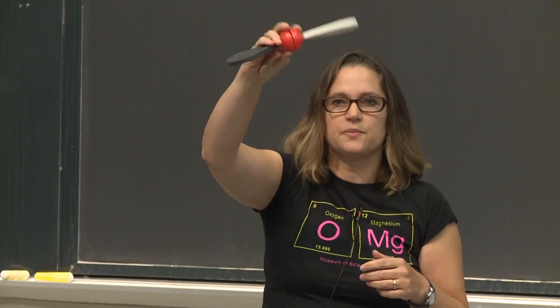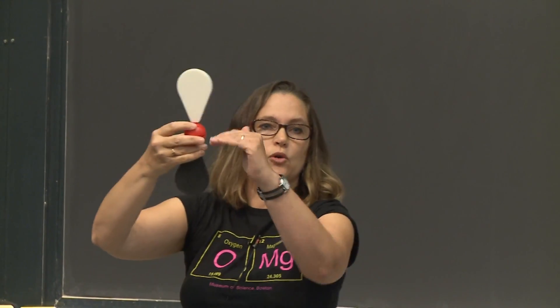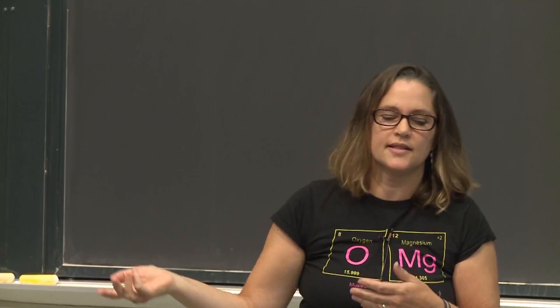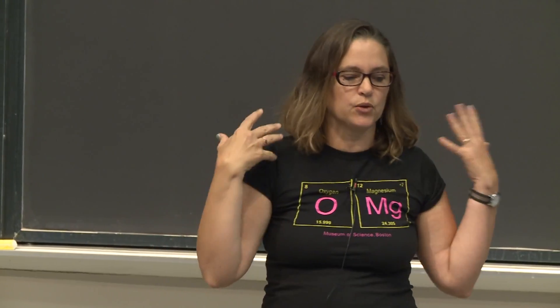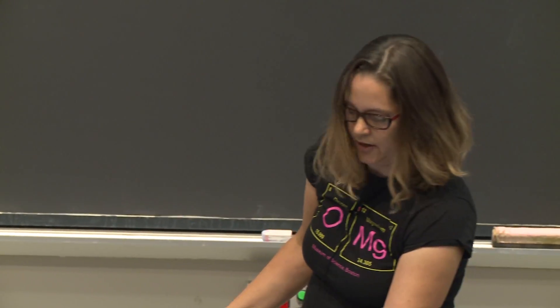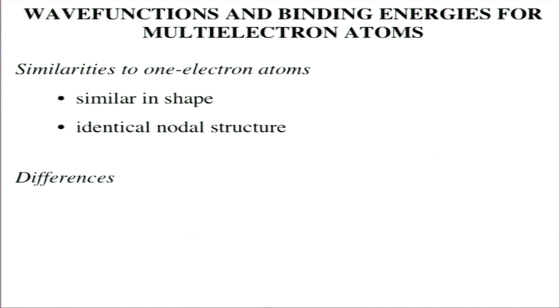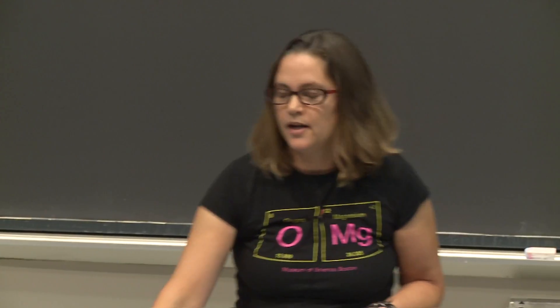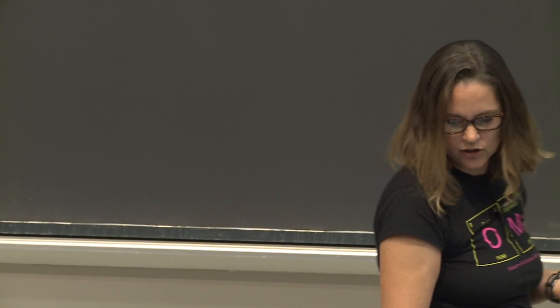Then we have our p orbitals, which can be in three different directions where you have nodal planes. It doesn't matter what you're talking about — one-electron system or more — you still are going to have those same shapes of the wave functions. Other similarities include the nodal structure: s is always going to be spherically symmetrical, and p is going to have those angular nodal planes.